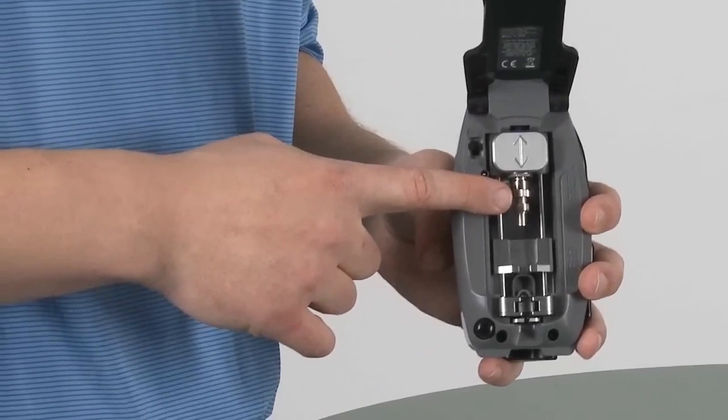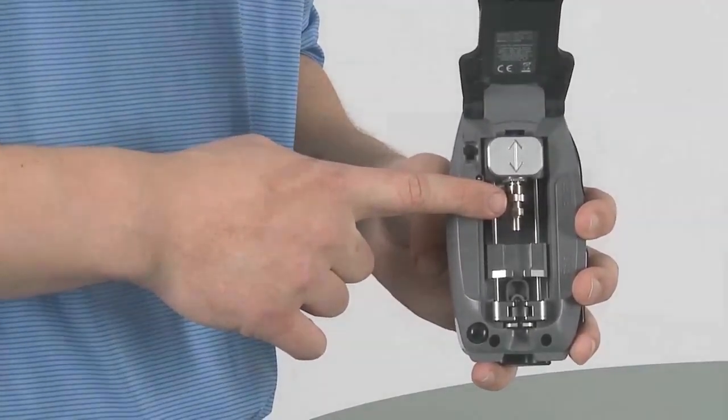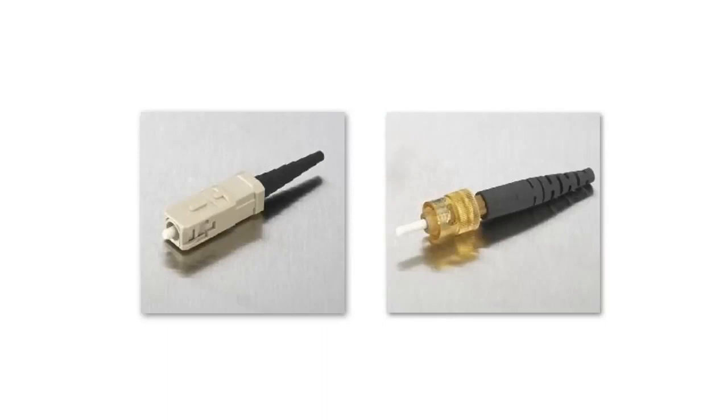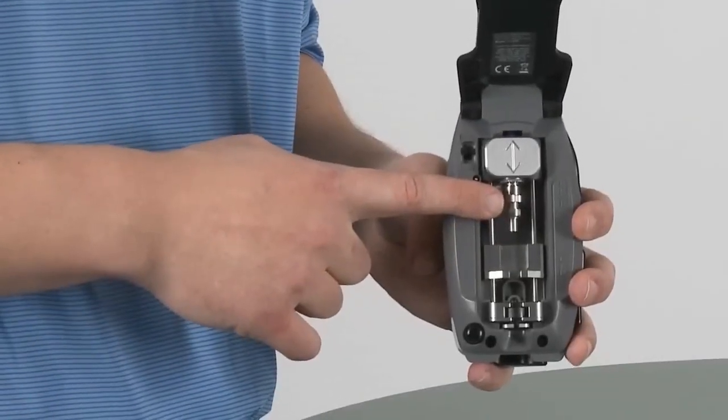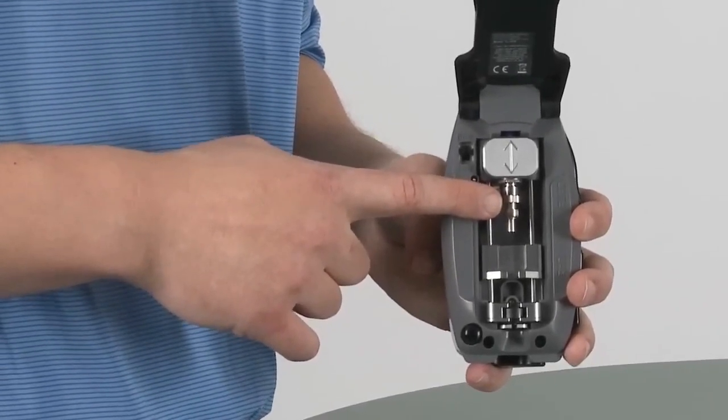When you receive your new tool, the 2.5mm ferrule adapter will be installed in the tool for use with either the SC or ST compatible UniCam connectors. If using an LC UniCam, you will need to switch the ferrule adapter for the 1.25mm adapter which comes in your tool kit.